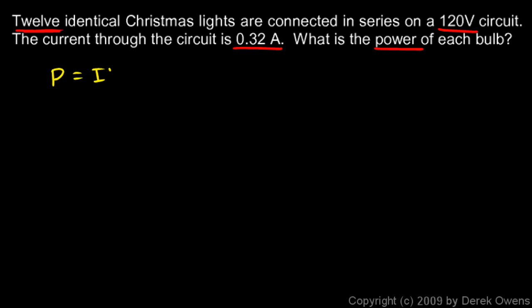We know that P is IV, so the power for the whole circuit will be the current for the whole thing, which we're given—that's 0.32 amps—times the voltage for the whole thing, which is 120 volts. So the power comes out to 38.4 watts. That's the total power. The power in each one, since there are 12 of them, will be one-twelfth of that. So P1, which will be the same for all 12 bulbs, will be 38.4 watts divided by 12, which comes out to 3.2 watts for each bulb.